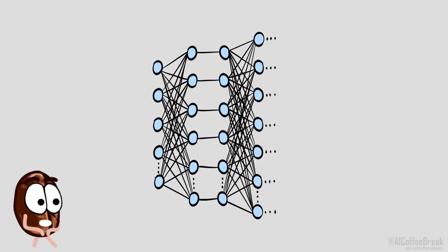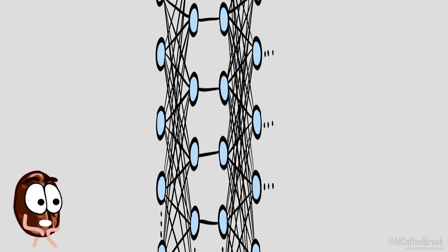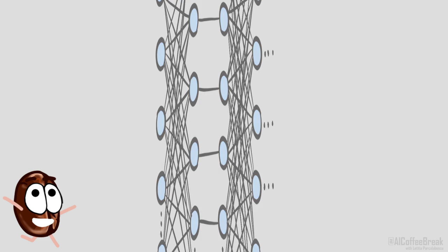However, there are indeed two limitations that an infinite-width network has, and which can be fixed by adding finite-width corrections.